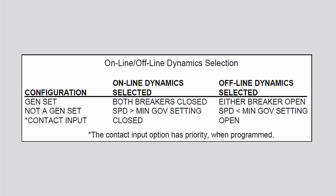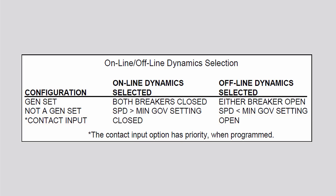Optionally, you can program a contact input to perform a select online dynamics function. If you do this, neither the utility tie nor generator breaker positions for generator applications, nor the minimum speed setting status for non-generator applications, will affect dynamics selection. When the programmed contact input is closed, online dynamics are selected; when open, offline dynamics are selected. You can also program a relay to indicate that the speed PID's online dynamics are in use.